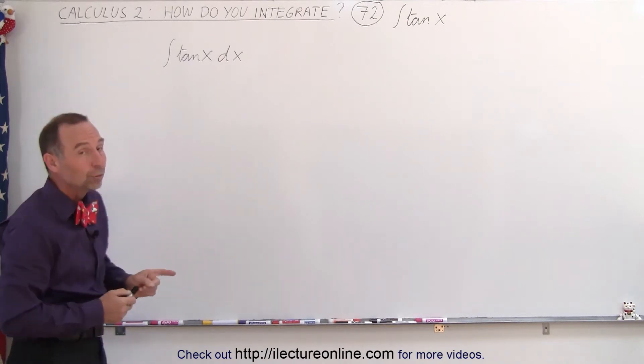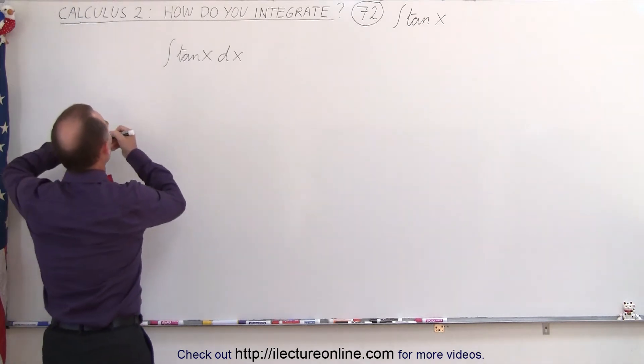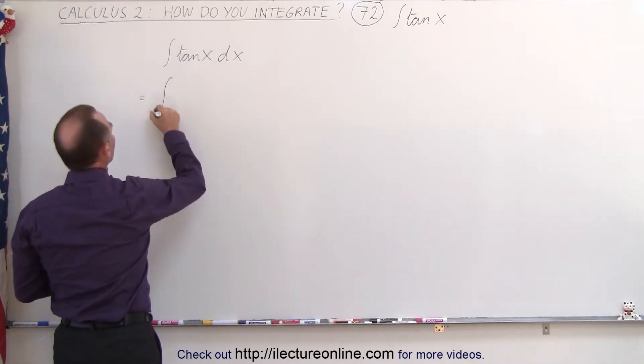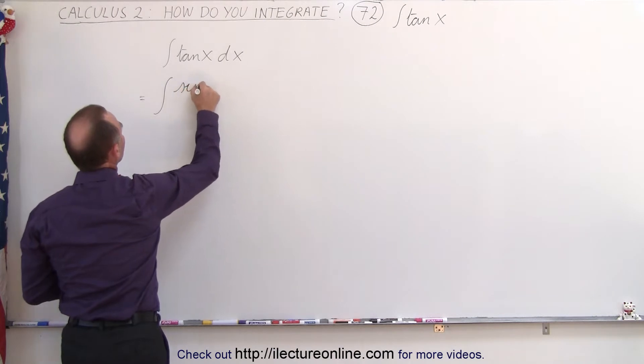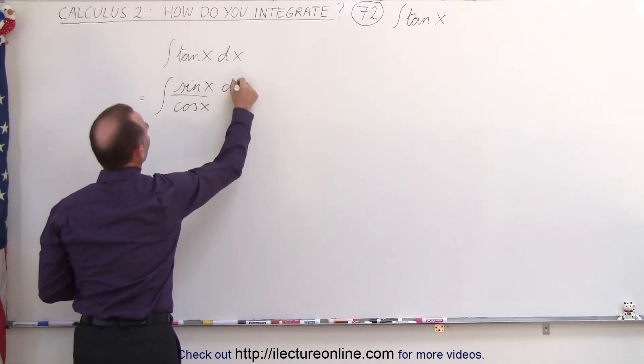Well, what we're going to do is replace the tangent by what it's equal to, the sine divided by the cosine. So we write this as the integral of the sine of x divided by the cosine of x times dx.